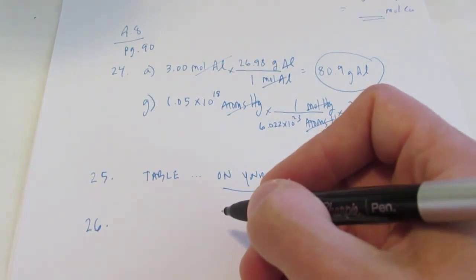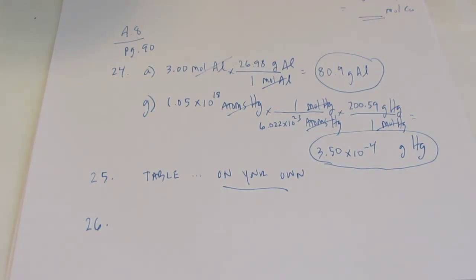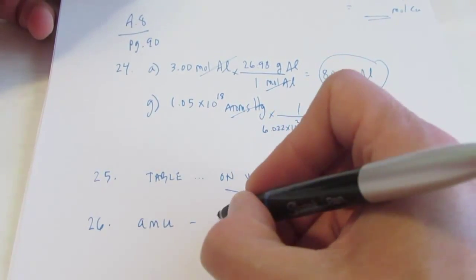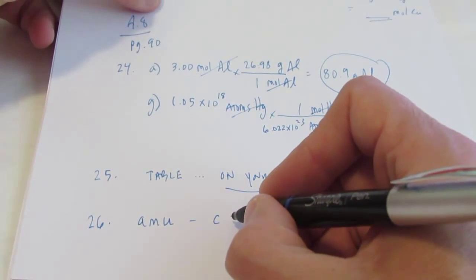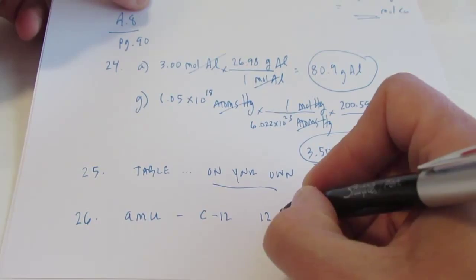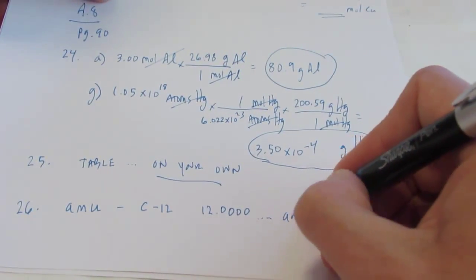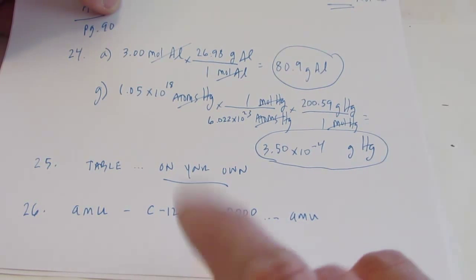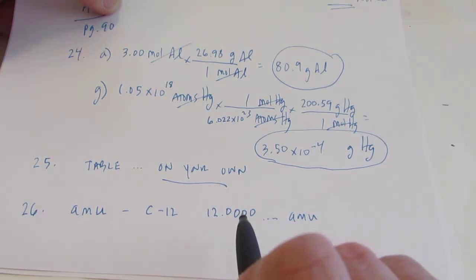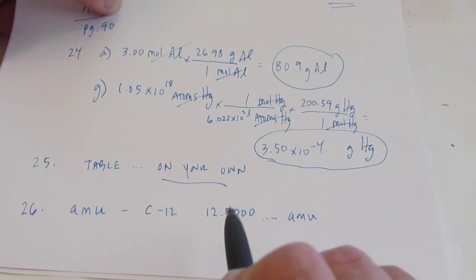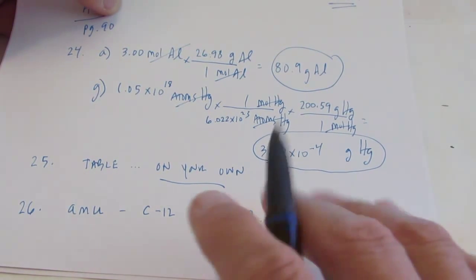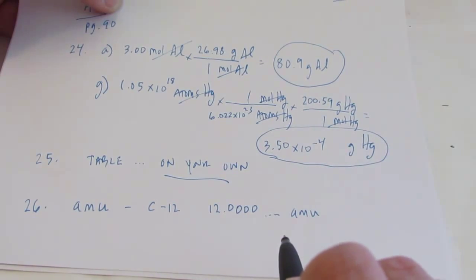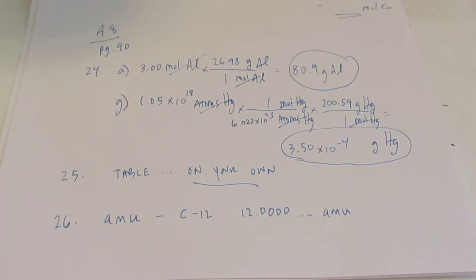Number 26 asks you to define an atomic mass unit and how it is related to a carbon-12 atom. Carbon-12 is an isotope of carbon that has an atomic mass of exactly 12.0000 atomic mass units — it's a defined amount. Every other element's atoms are related to the mass of a carbon-12 atom. So if an atom is one-twelfth the mass of a carbon-12 atom, it has a mass of exactly 1.000000 atomic mass units. If it's ten times larger, it would be 120.000000 atomic mass units.